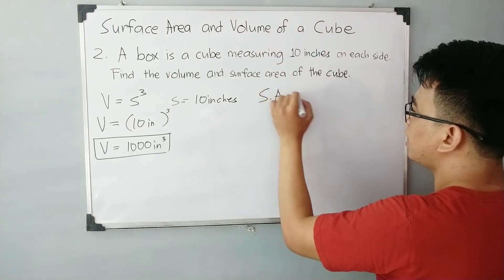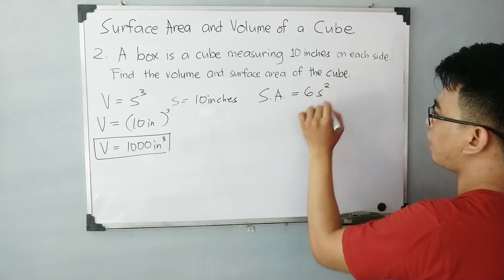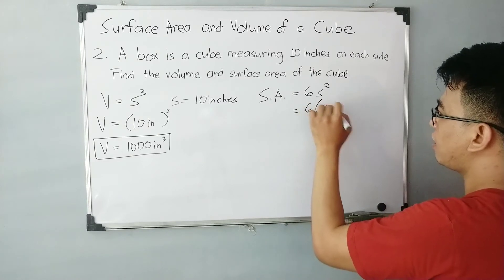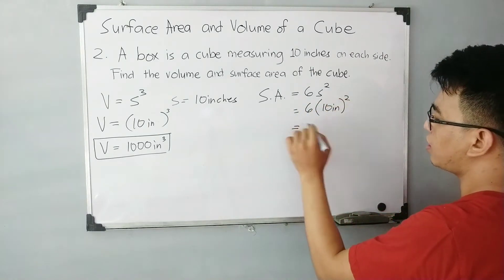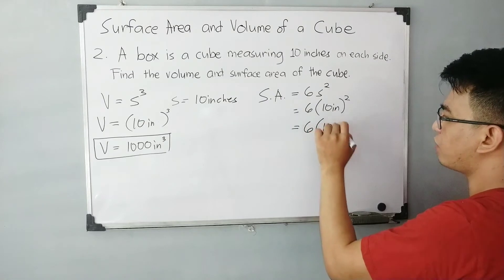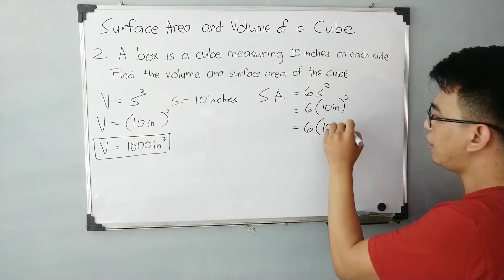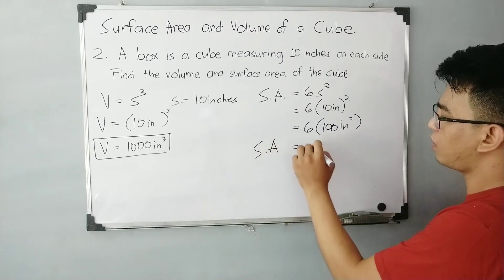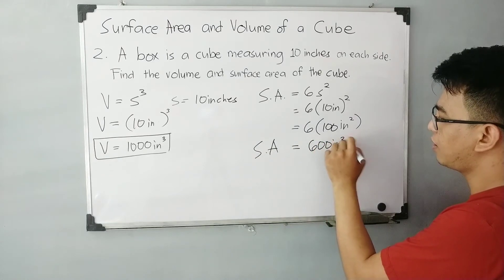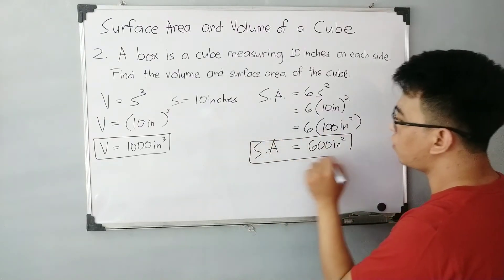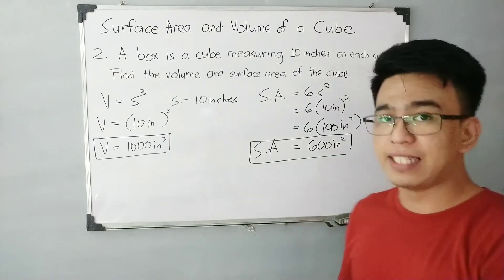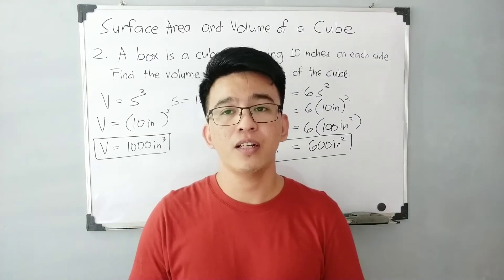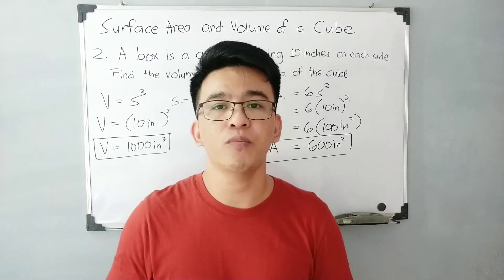And for the surface area: SA is equal to 6 times S squared. With the same value of S which is 10 inches, you have 6 times (10 inches) squared. This gives you 6 times 100 — because 10 times 10 is 100 inches squared. Therefore, the surface area is equal to 600 inches squared.